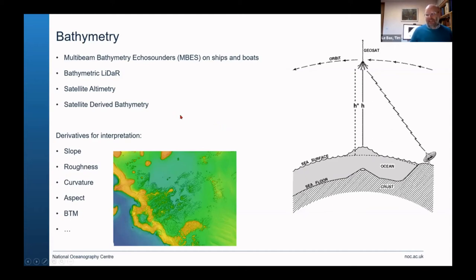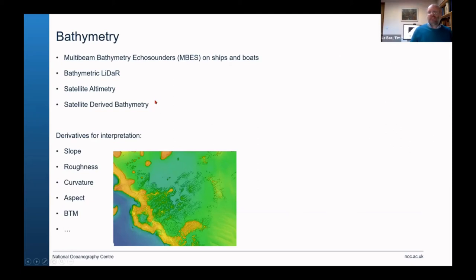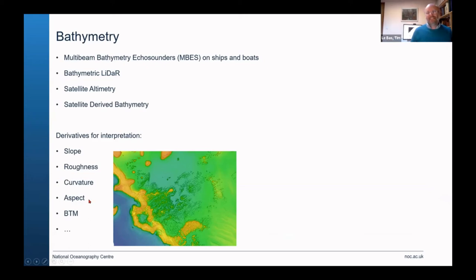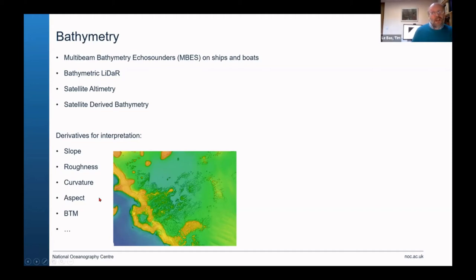We have bathymetry, and as James explained, slope is really good for habitat mapping. Various habitats require a steep slope, a certain roughness, or a particular aspect — whether it's facing into a current, or whether the current goes past it — plus curvature. These are all derivatives we can calculate quite easily, which I'll show you in a moment.